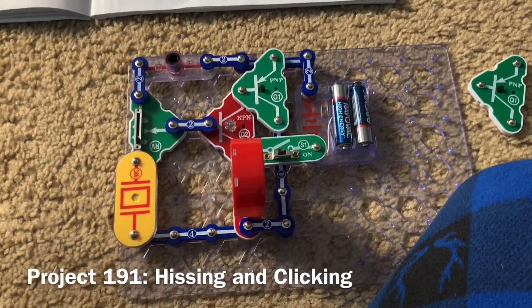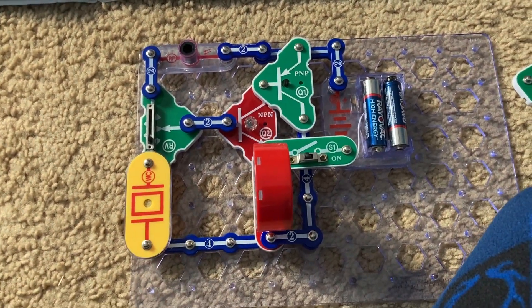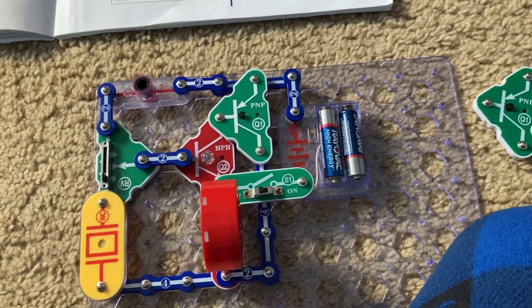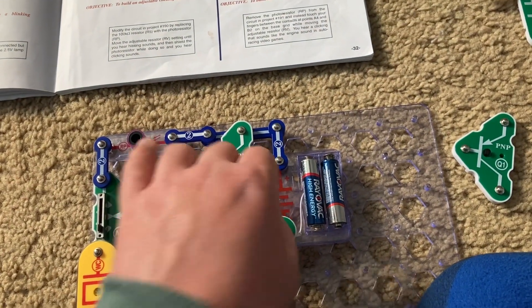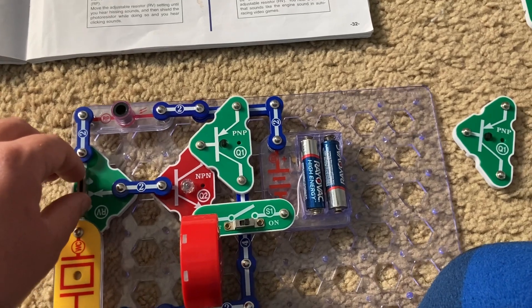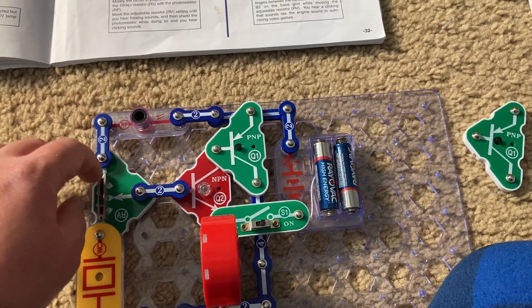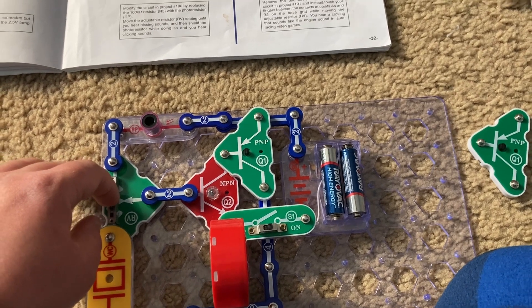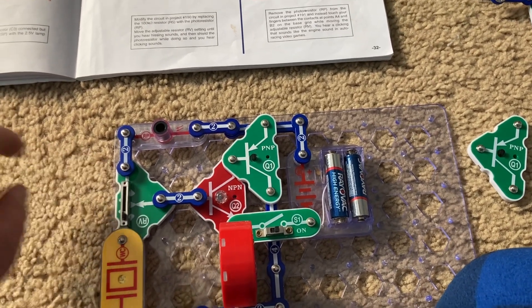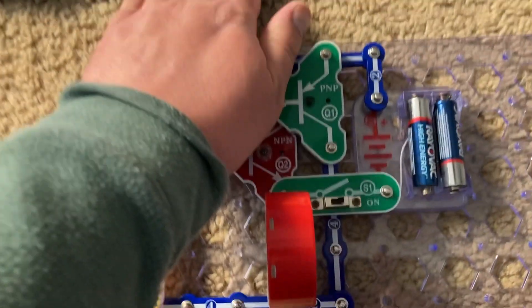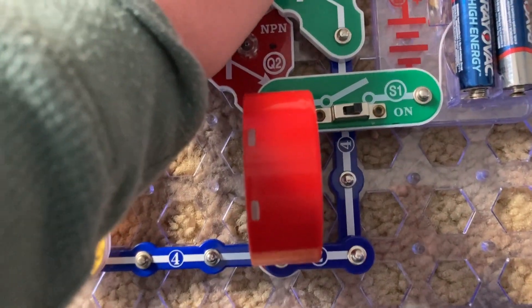This is hissing and clicking. I replaced the R5 resistor with the photoresistor. And now, once you move the lever on the adjustable resistor so that you hear a hissing sound, hold your hand over the photoresistor and you hear a clicking noise.